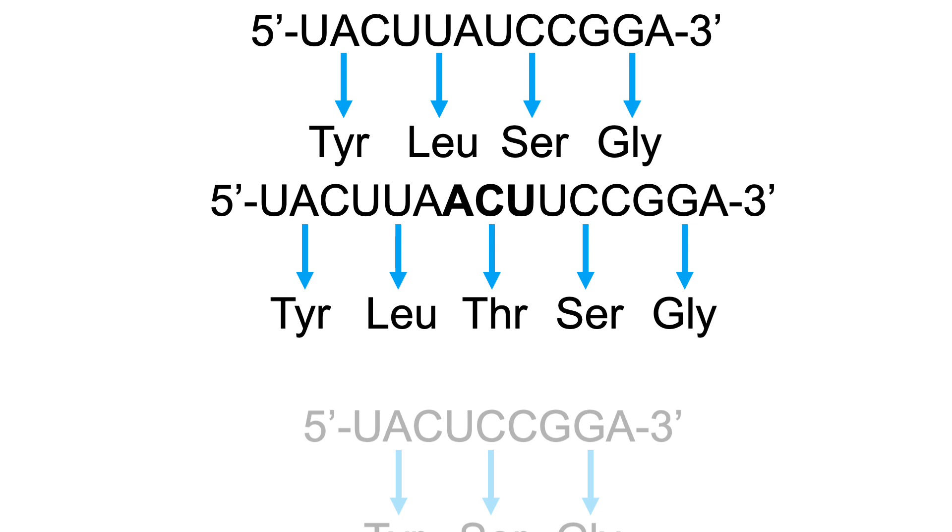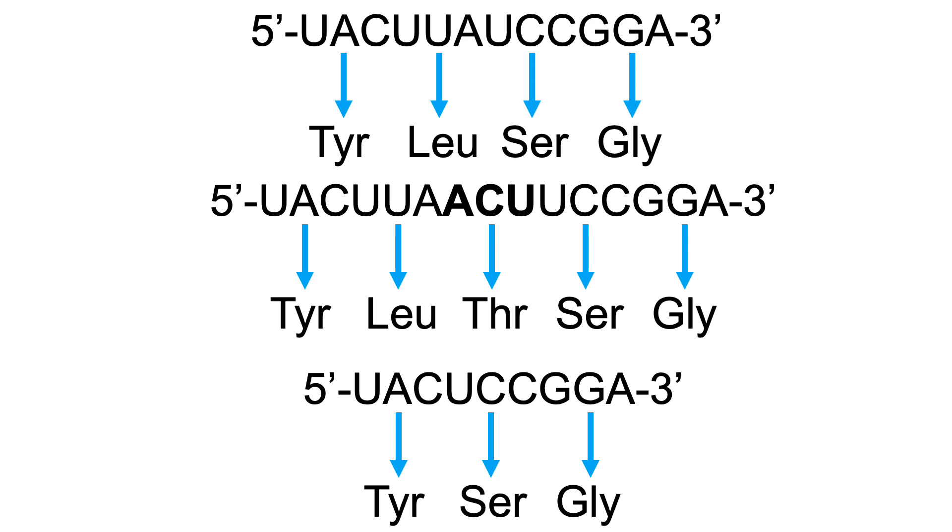Shortly after, Crick and his team discovered the triplet nature of the genetic code, as only the removal or addition of triplets produced functioning proteins in a T4 bacteria batch. The triplet nature meant there was a total of 64 possible codon sequences, encoding the 20 amino acids.